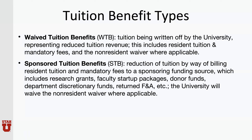The other type of tuition benefit is sponsored tuition benefits, where there is a reduction of tuition by way of billing resident tuition and mandatory fees to a sponsoring funding source, which includes research grants, faculty startup packages, donor funds, department discretionary funds, and for research assistants working on payroll where there is not a different funding source, the returned F&A to your college. The university will, in these cases, continue to waive the non-resident waiver where applicable.